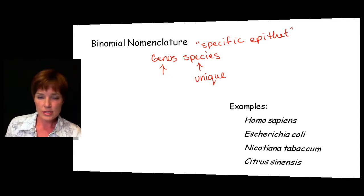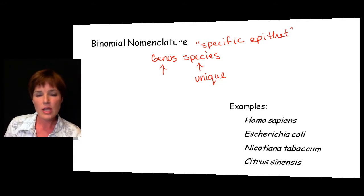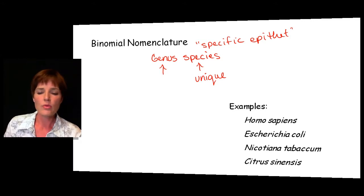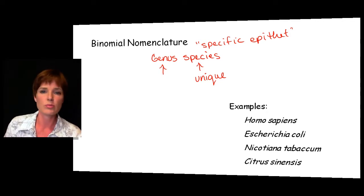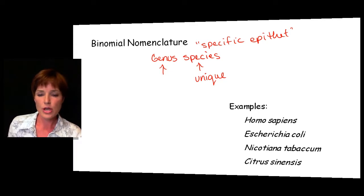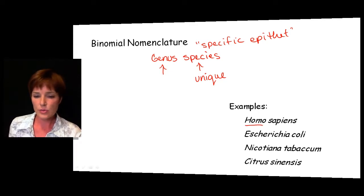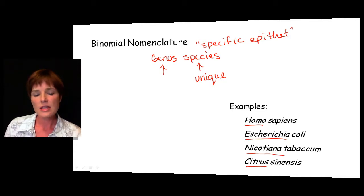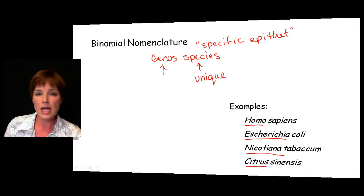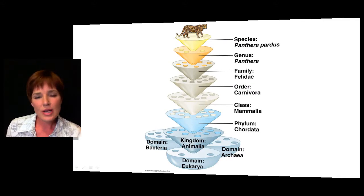Some examples: Homo sapiens for human beings, Escherichia coli for E. coli, Nicotiana tabacum for common tobacco, and Citrus sinensis for the common orange. Notice that the first part — the genus name — is capitalized, and the second part — the specific epithet — is not capitalized.